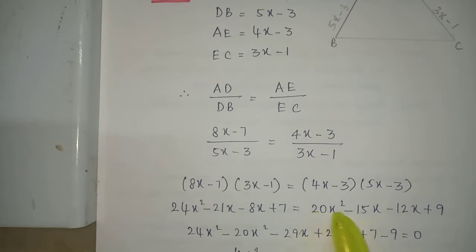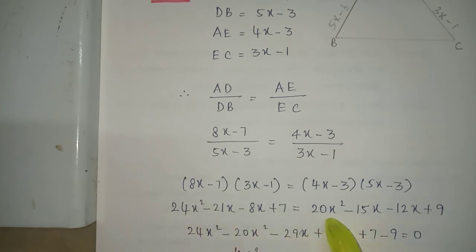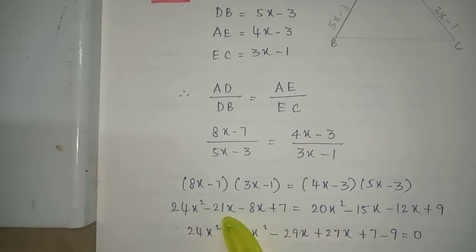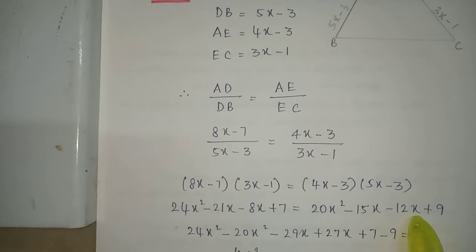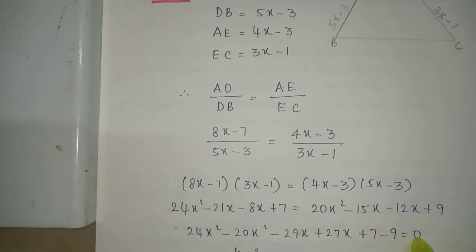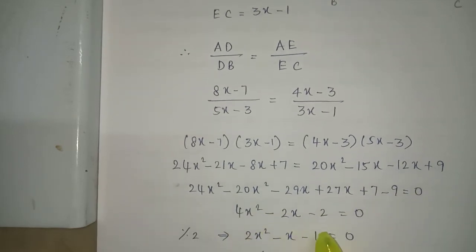Taking everything to the left hand side equal to zero: 24x² minus 20x² gives 4x². Collecting x terms: minus 21x minus 8x plus 15x plus 12x gives minus 2x. Constants: 7 minus 9 gives minus 2. So 4x² minus 2x minus 2 equals 0. Dividing throughout by 2 gives 2x² minus x minus 1 equals 0.